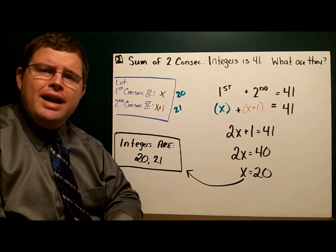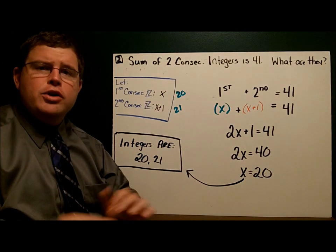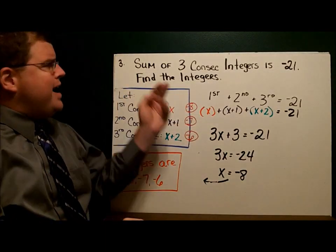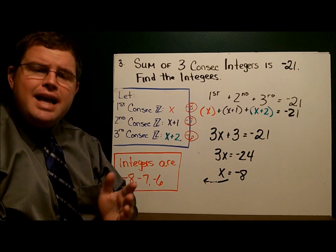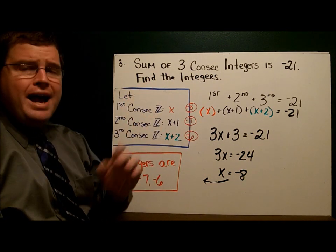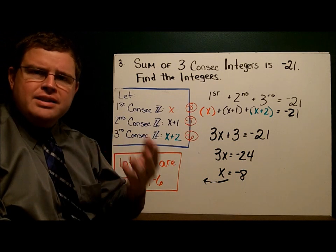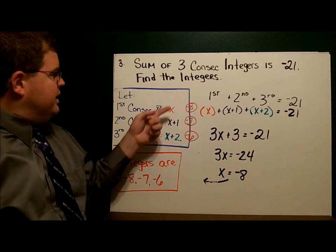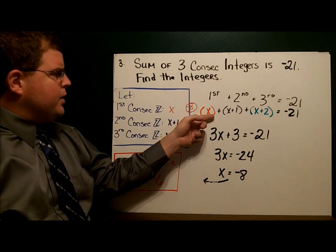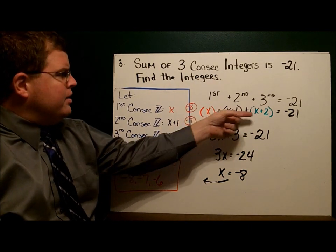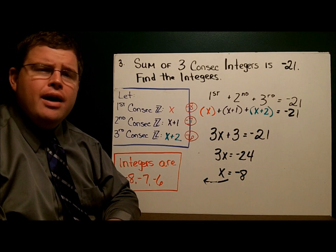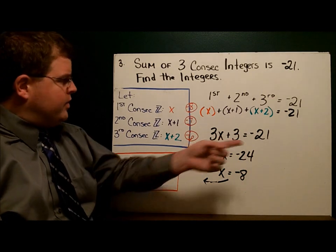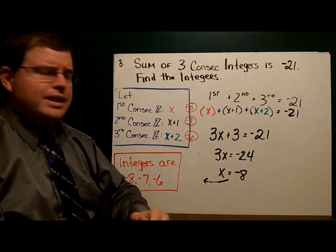Now how about an example that has a little bit more going on — one that's a little more challenging. On example three, we have three consecutive integers. Same idea: the first one is x, the second is x plus one, and the third is x plus two. The sum is negative 21, so x plus x plus one plus x plus two equals negative 21. That gives me three x plus three equals negative 21. Solving the equation, x equals negative eight.